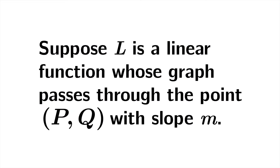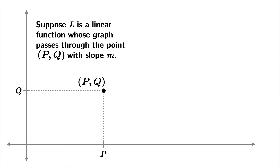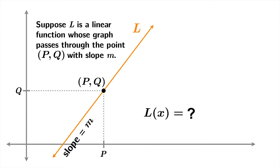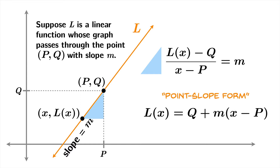So let's start with what we know. Suppose L is a linear function whose graph passes through the point (p, q) with slope m. We know that the point (p, q) is on our graph and it passes through that point with slope m. If (x, L(x)) is any point on this graph, knowing that the slope is m enables us to write down the formula quickly. We can solve for L(x) and leave it in point-slope form: L(x) = q + m(x − p).